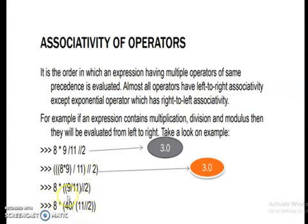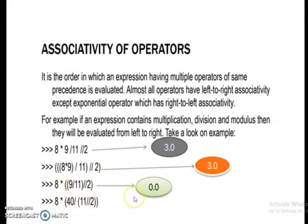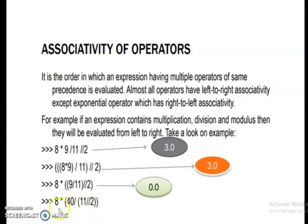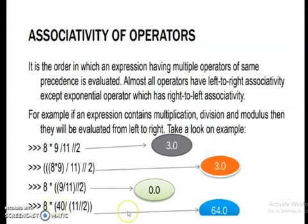See a third example. Here the parenthesis is given only for certain numbers, so they will evaluate first. So 9 divided by 11 gives 0, then 0 floor division 2 gives 0, then 0 times 8 gives the answer 0. Then here 11 floor divided by 2 — these two are separately grouped, so this evaluates first and gives 5. Then 40 divided by 5 is 8, then 8 times 8 is 64, so we get the answer 64.